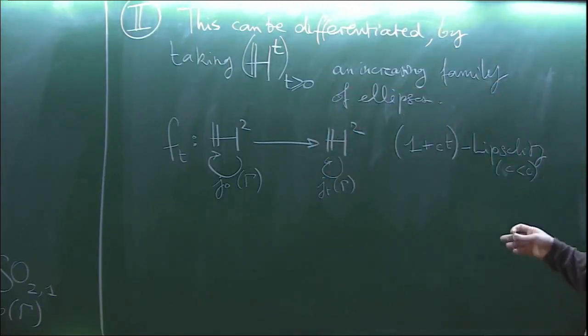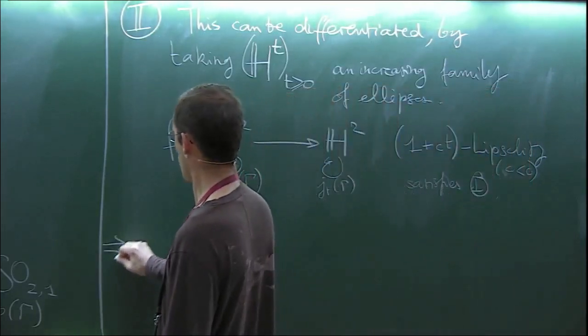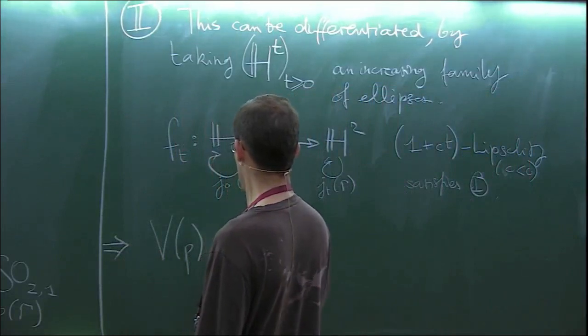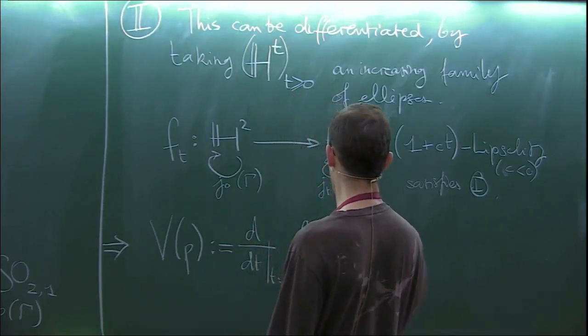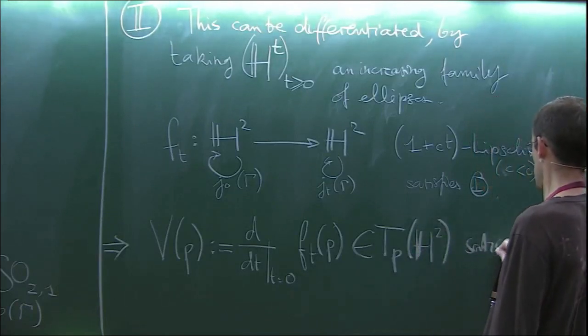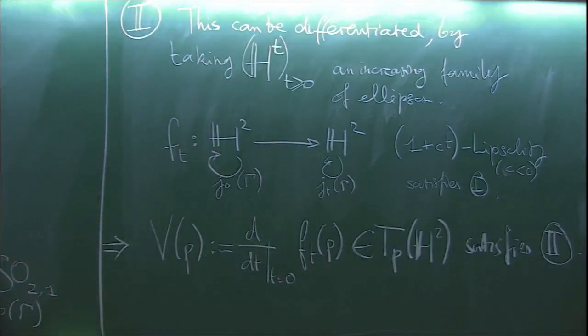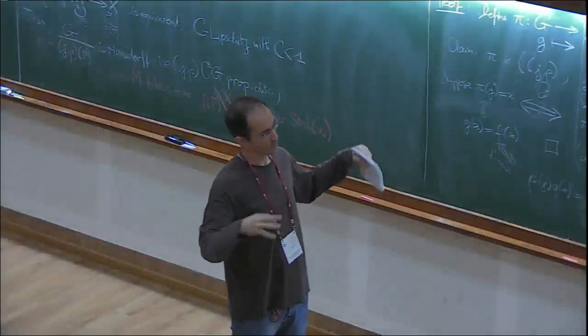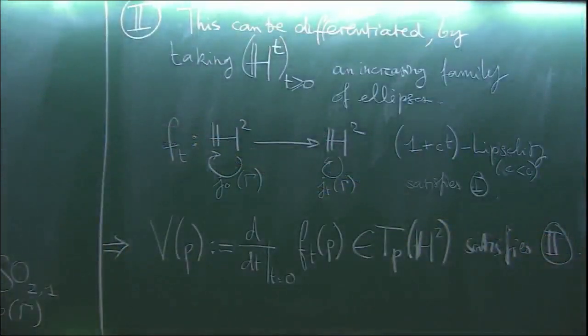Essentially, if F_t goes from H^2 to H^2 and is equivariant with respect to J_0 and J_t of gamma, one plus Ct Lipschitz for some negative C - so if this satisfies the assumptions of Theorem 1 - then V of P is defined as the derivative of F_t of P. It's just a tangent vector at P. The contraction assumption differentiates to the contraction assumption of Theorem 2, and the equivariance assumption in Theorem 1 differentiates to the equivariance assumption in Theorem 2. So these are not just analogues - there's an actual global statement that I'm not going to write down.